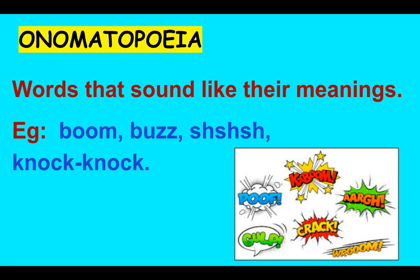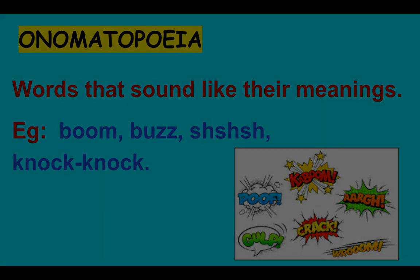Let's see another poetic device — onomatopoeia: words that sound like their meanings. In other words, words that exactly sound like their own sounds are onomatopoeic in nature. For example: boom, buzz, shh, knock-knock. All these words themselves produce a sound, meaning they are onomatopoeic in nature. There are many examples of onomatopoeia — you can see them in the picture as well.